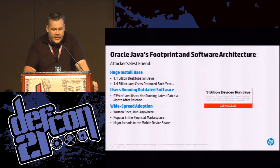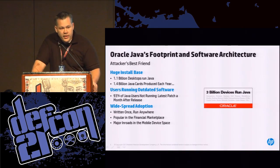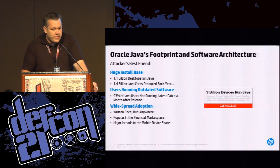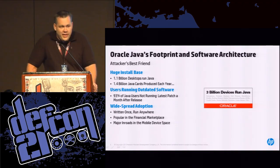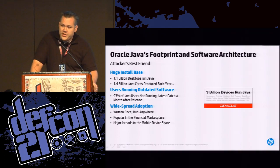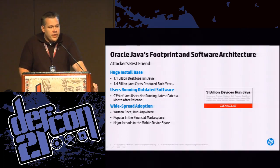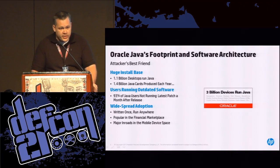Looking at Java's footprint, it has a huge installation base and that's what makes it a big red target for attackers — Oracle actually boasts about it during the installation process. Three billion devices run Java. According to Oracle, one billion desktops actually run Java itself, and somebody produces 1.4 billion Java cards every year. Schools are using Java as the base language for computer science students, so thousands of developers come out every year with Java as their core language. As a result, there's been massive widespread adoption of Java in the financial marketplace and in the mobile space, making it a really good target for attackers.